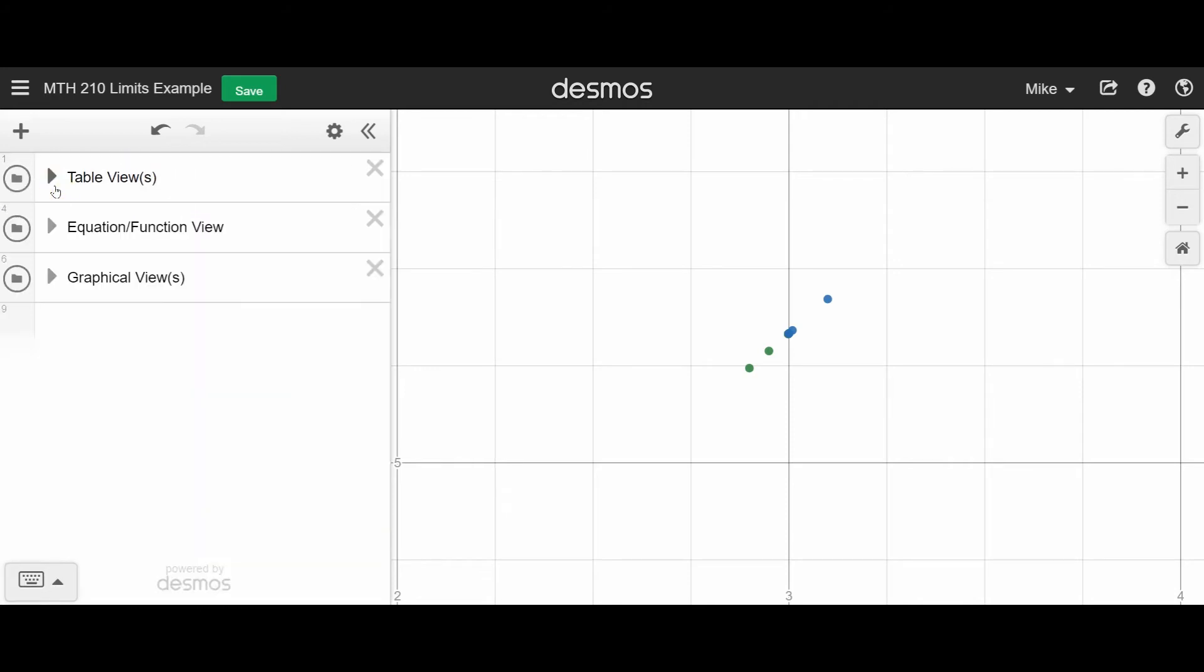Okay, so that would be a table perspective. What if we were to just look at the equation? Well, the equation is actually a bit more complicated. But the equation that those tables actually came from looks like this. And the graph, which we'll talk about in a minute, is important. But notice that this function is not actually defined when x is equal to 3.